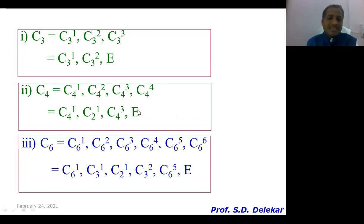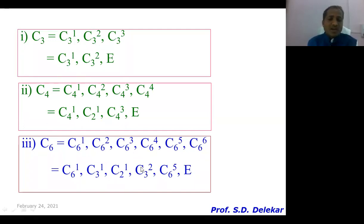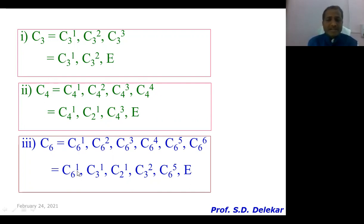So C4 generates four subelements: E, C4¹, C2¹, and C4³. Similarly for C6, the six subelements simplify as follows: C6¹ remains as it is; C6² is collinear to C3¹ (dividing by 2); C6³ simplifies to C2¹; C6⁴ simplifies to C3²; C6⁵ has no collinear element; and C6⁶ is E. So benzene, with C6 as the principal axis of symmetry, generates: E, C6¹, C3¹, C2¹, C3², and C6⁵.